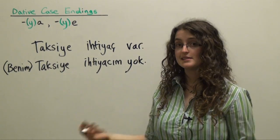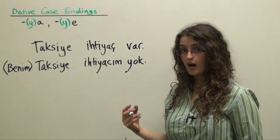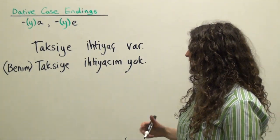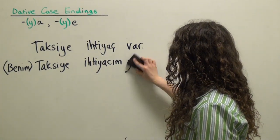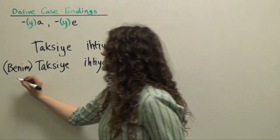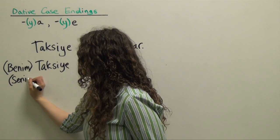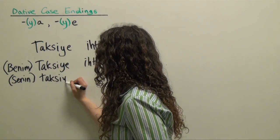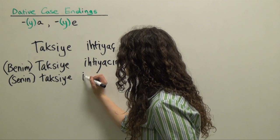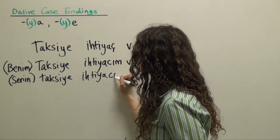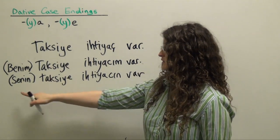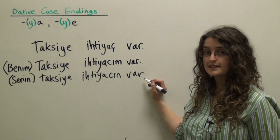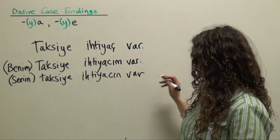We can do this with all of our possessive suffixes. Let's say we want to say 'you' (singular informal) do or do not need a taxi. We can have an optional personal pronoun in the genitive: 'senin' — your. 'Taksiye ihtiyacın var' — your need for a taxi exists, you need a taxi. Or alternatively, 'senin taksiye ihtiyacın yok' — you don't need a taxi, literally your need for a taxi does not exist.